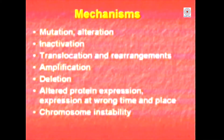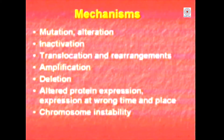Now just to sum up, the mechanisms which convert proto-oncogenes into oncogenes can be quickly summarised. You could have a mutation or alteration in a gene resulting in a change in the protein. It could lead to inactivation of a regulatory protein, resulting in the partner being more active. It could result from translocation or rearrangement in the chromosomes or genes. It may result from amplification — observed in homogenously staining regions, MYC, and many other oncogenes. It may also be because of a deletion which de-regulates the gene, thereby giving you increased expression.